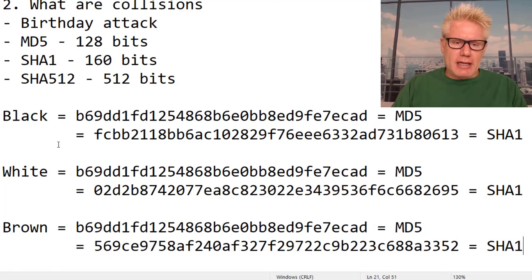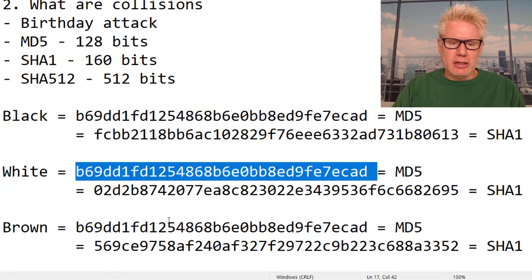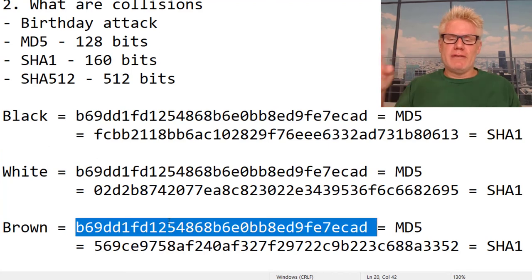So with Jack Black, MD5 right here, Barry White right here, and James Brown, same MD5, three different inputs. That's a collision. You notice the SHA-1 is different for all three though.